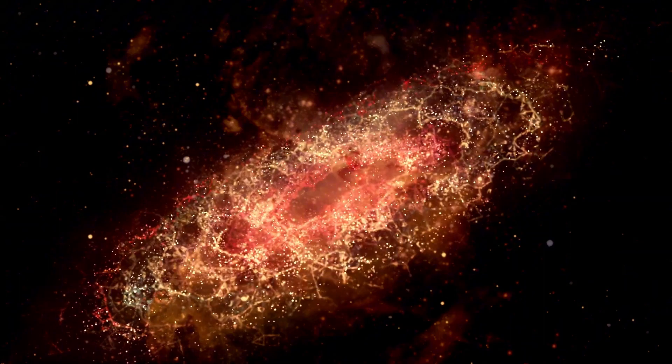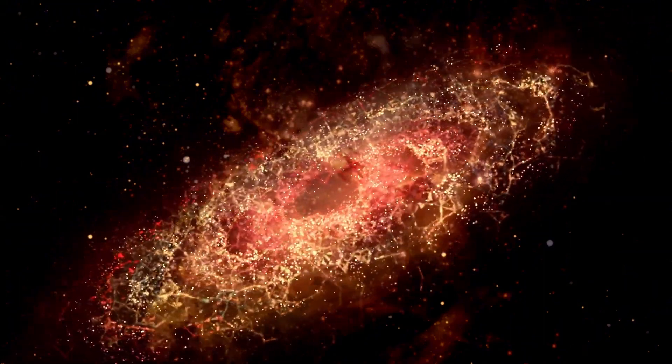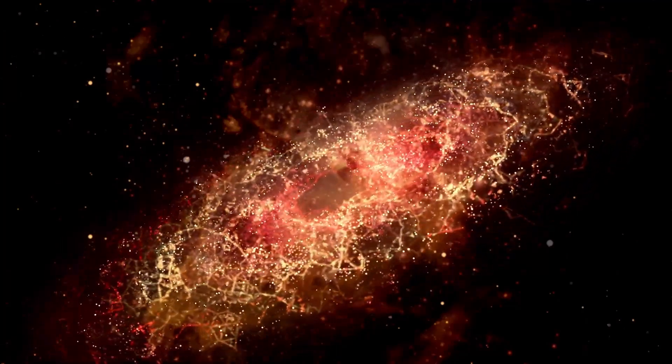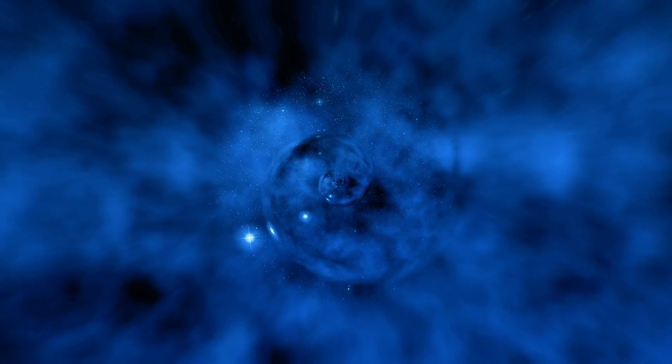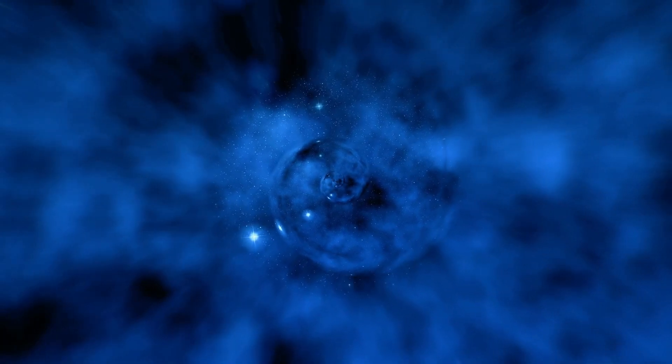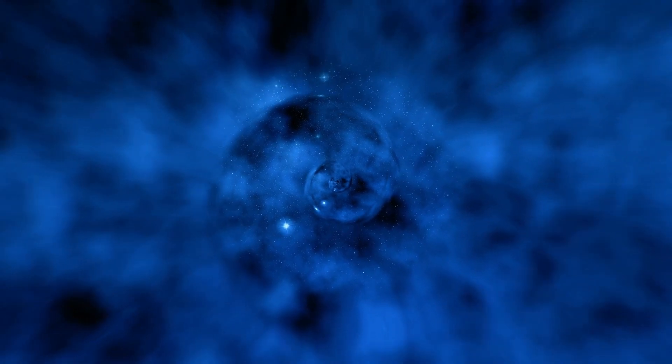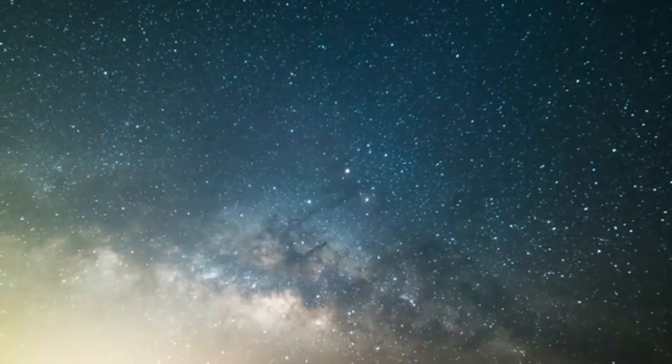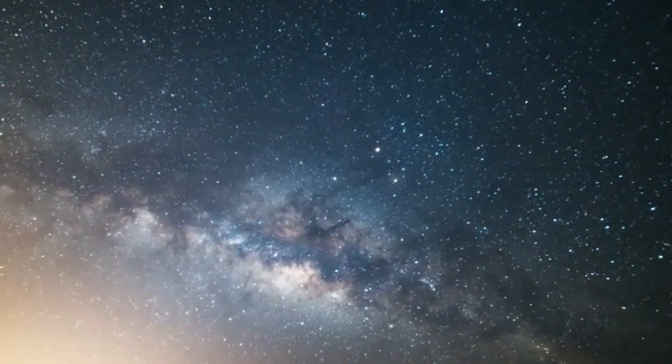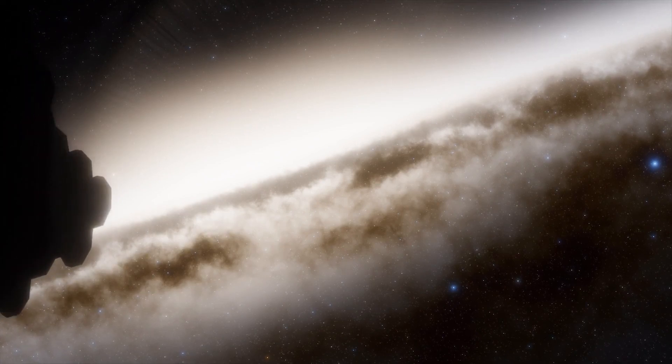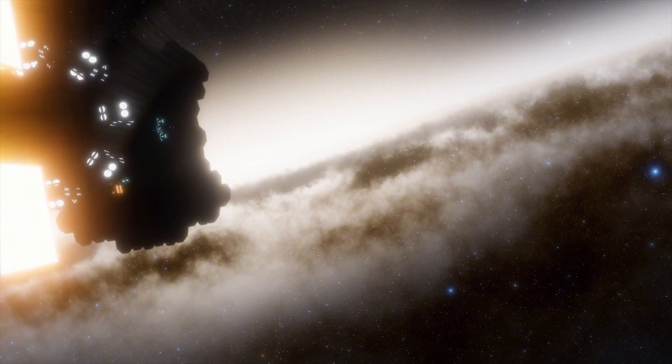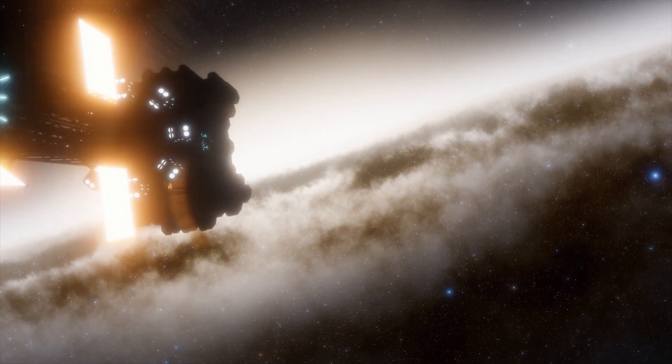The explosion of a red supergiant like Betelgeuse has significant effects on its surrounding star-forming regions. The shockwaves from a supernova can trigger the formation of new stars by compressing nearby gas and dust. This process, known as triggered star formation, can lead to the creation of new stellar systems in the aftermath of a supernova explosion. The interaction between the shockwave and the interstellar medium also contributes to the dynamics of the galactic ecosystem, influencing the distribution of matter and energy throughout the galaxy.